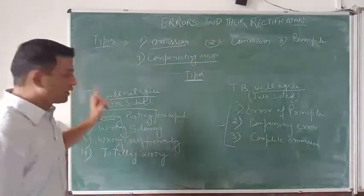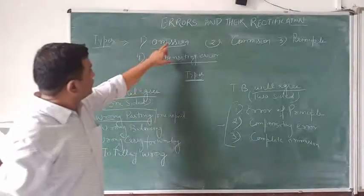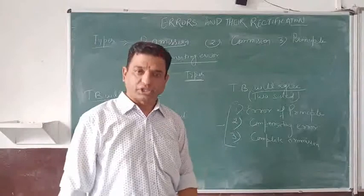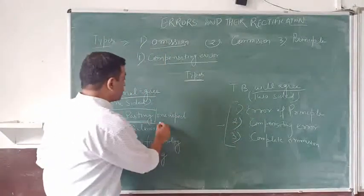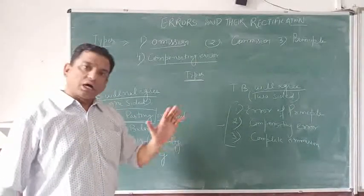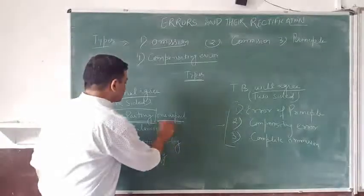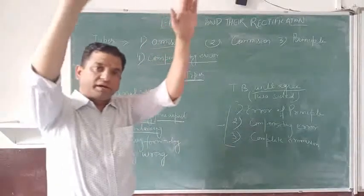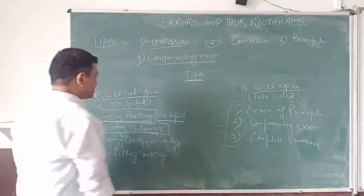When the trial balance is not agreeing, the reasons may be: Number one — wrong posting. This is an error of commission. When you are posting wrongly, for example purchase account debit to cash, but instead of recording in the cash ledger you recorded it in another ledger — that is wrong posting. Or when you post the wrong amount to the right account, or the right amount to the wrong account, the trial balance will not agree. Second — wrong balancing. When you prepare any ledger you have to balance it. If you have made any mistake in balancing, the trial balance will not agree.